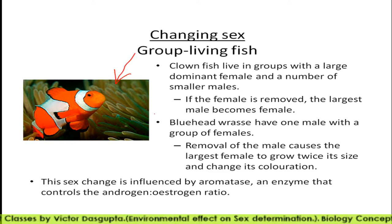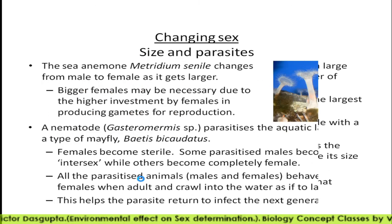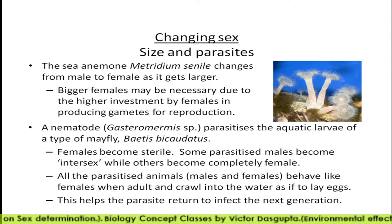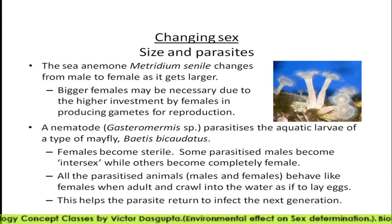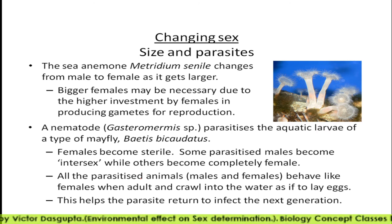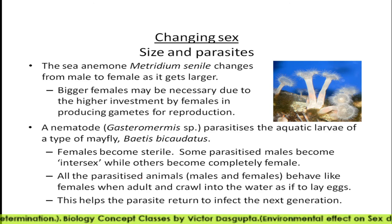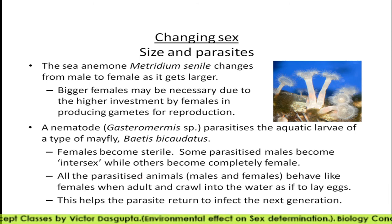Regarding size and parasites: in sea anemone, bigger females may be necessary due to higher investment by females in producing gametes for reproduction. In nematode parasites, aquatic larvae cause females to become sterile, some parasitic males become intersex, while others become completely female.